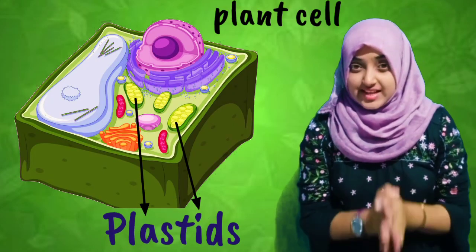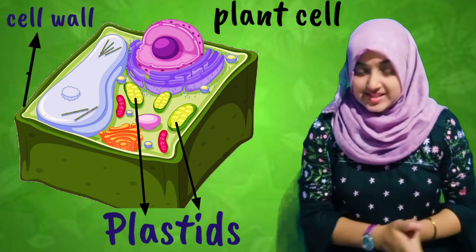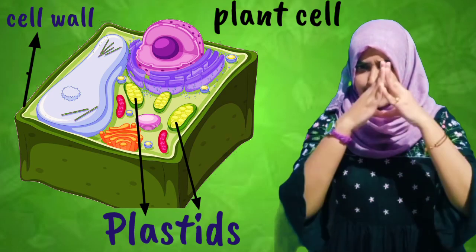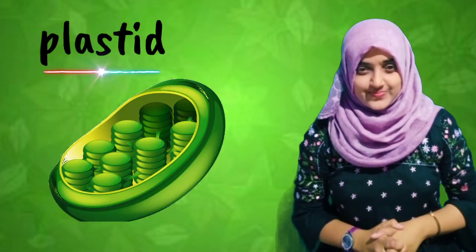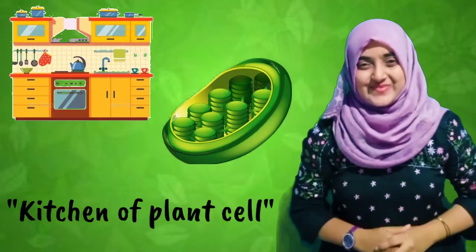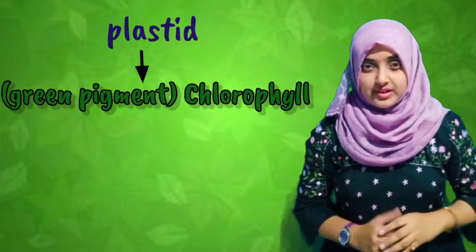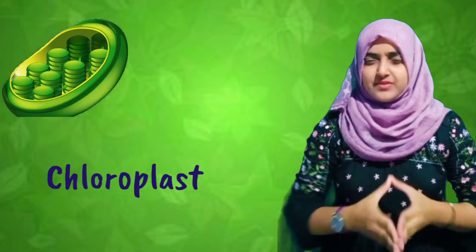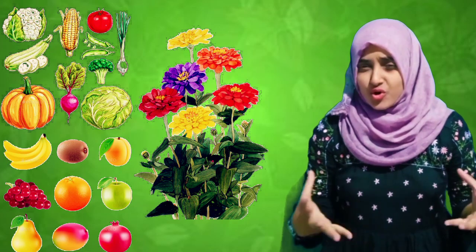Another interesting component is the plastid. Just like the cell wall, plastids are present only in plant cells — animal cells have no plastids. They are unique to plant cells because they are involved in the food-making process in plants, that is photosynthesis, and hence are regarded as the kitchen of the cell. Plastids are of various colors; those with the green pigment chlorophyll are called chloroplasts. These chloroplasts give the pretty green color to leaves, and in fact all vegetables, fruits, flowers, and plants are colorful because of plastids.